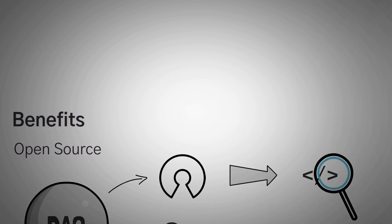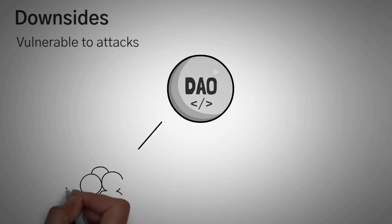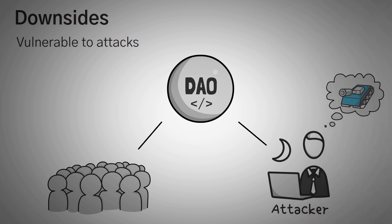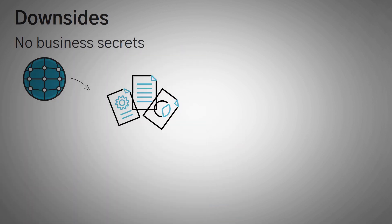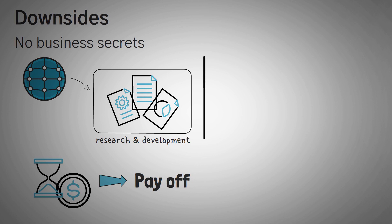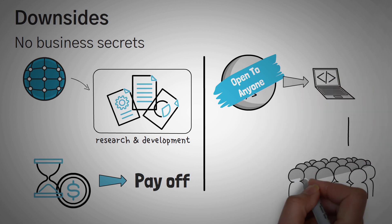Even though there are a ton of benefits to a DAO, there are two downsides. The first downside is that they are vulnerable to attacks. Since anyone can look at the code, attackers can look at it too. If attackers know intimately how the code works, they can reverse engineer attacks and even test the code before deploying it. If it works, the DAO could be attacked. The second downside is that there are no business secrets. Research and development is usually corporate information that corporations spend a lot of money and time on. In a DAO, business secrets are difficult to keep since the code is all open source and anyone can look at how the DAO is set up.